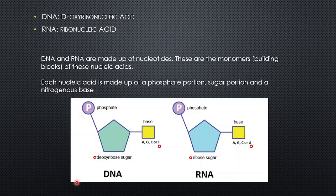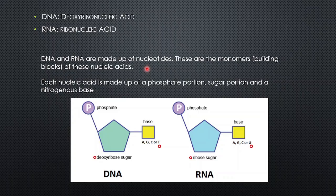There are two kinds of nucleic acids: DNA, which is deoxyribonucleic acid, and RNA, ribonucleic acid. DNA and RNA are made up of nucleotides, and nucleotides are monomers — the building blocks. So if they ask what are the monomers of nucleic acids, you say they are nucleotides. Each nucleotide is made up of a phosphate portion, a sugar portion (the pentagon shape), and a nitrogenous base.